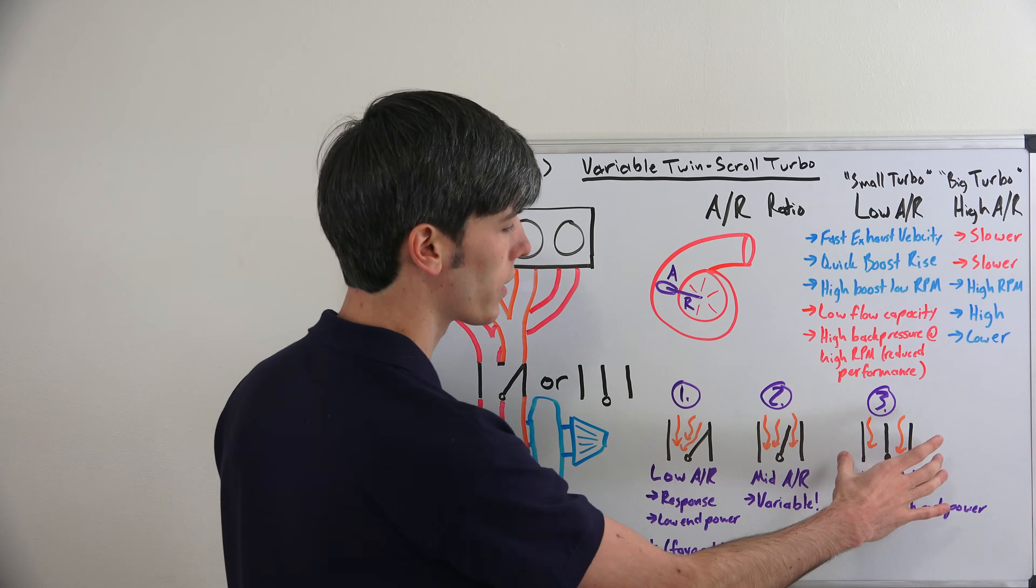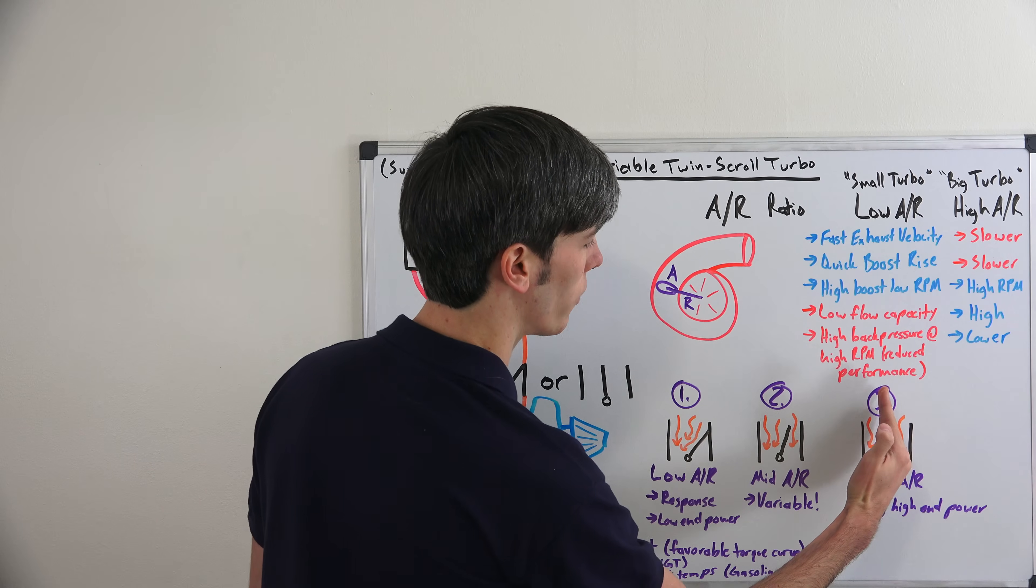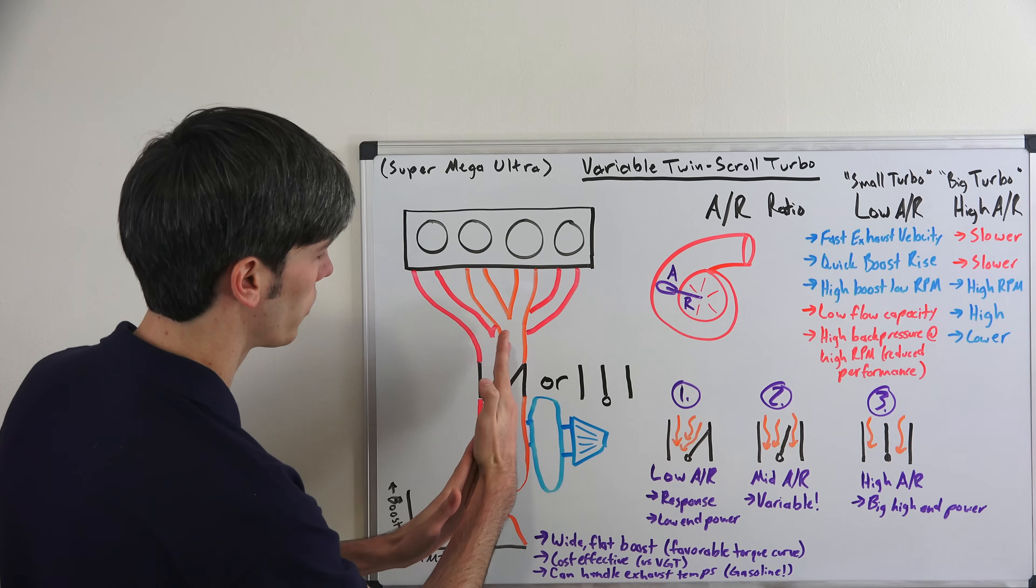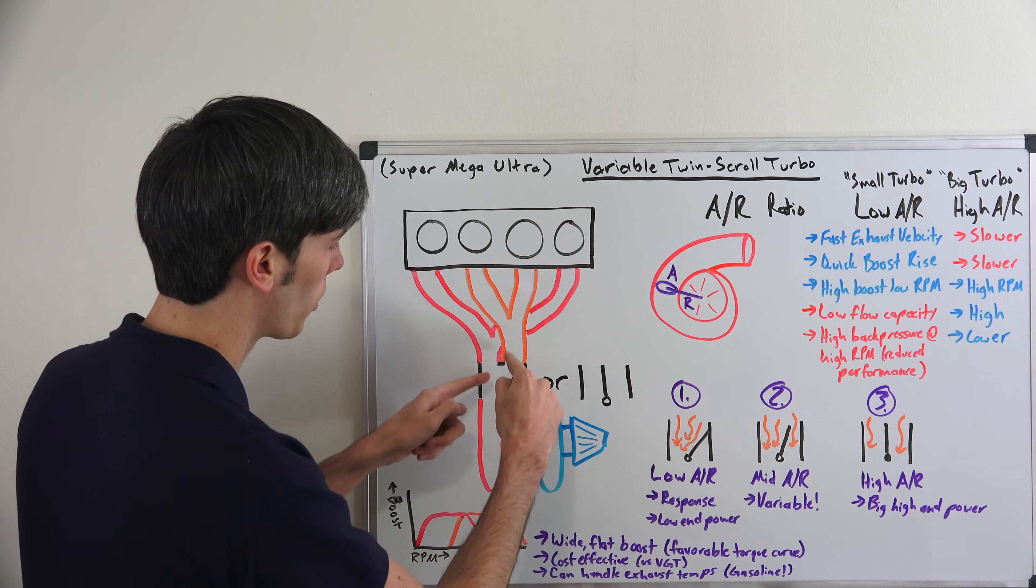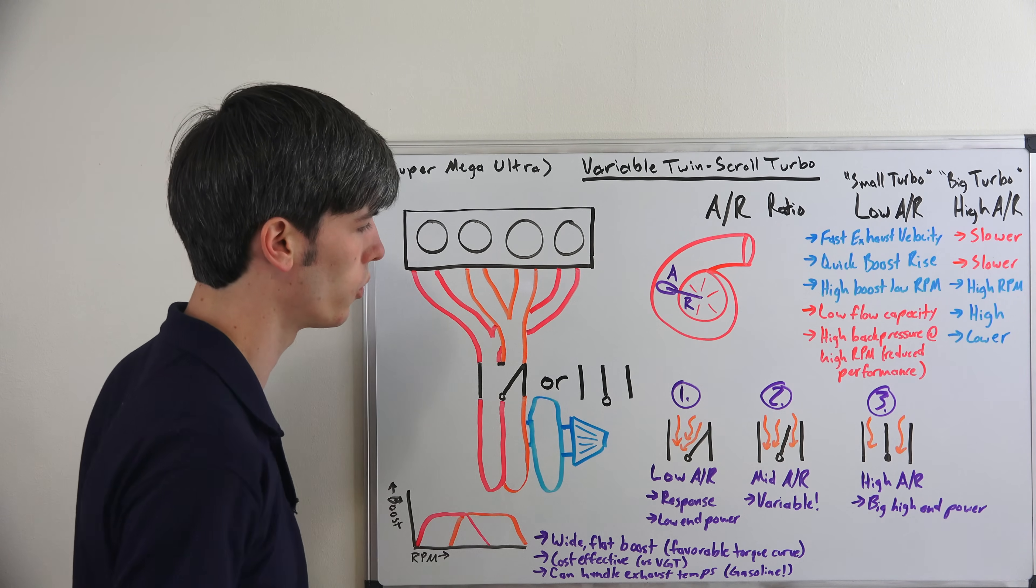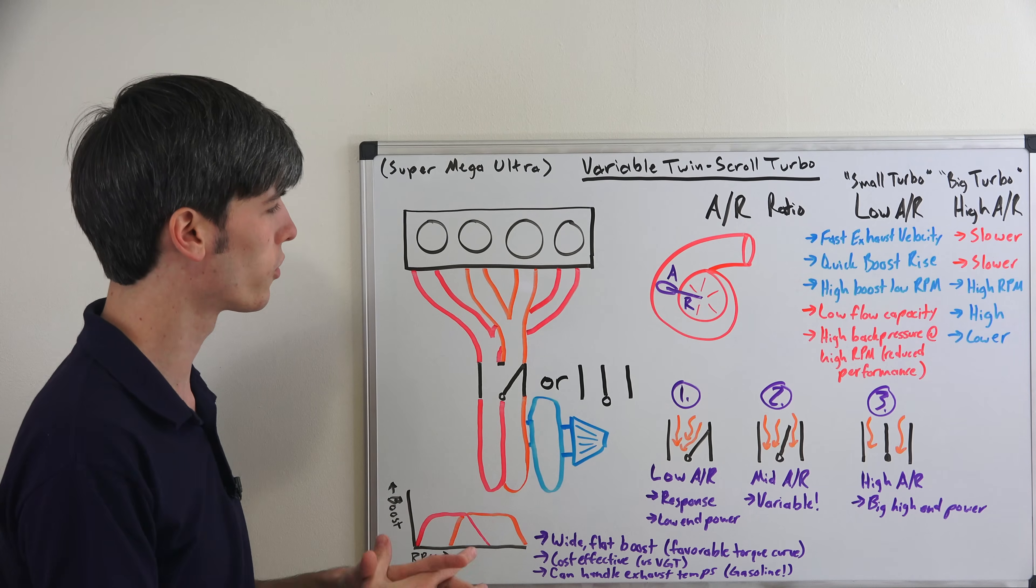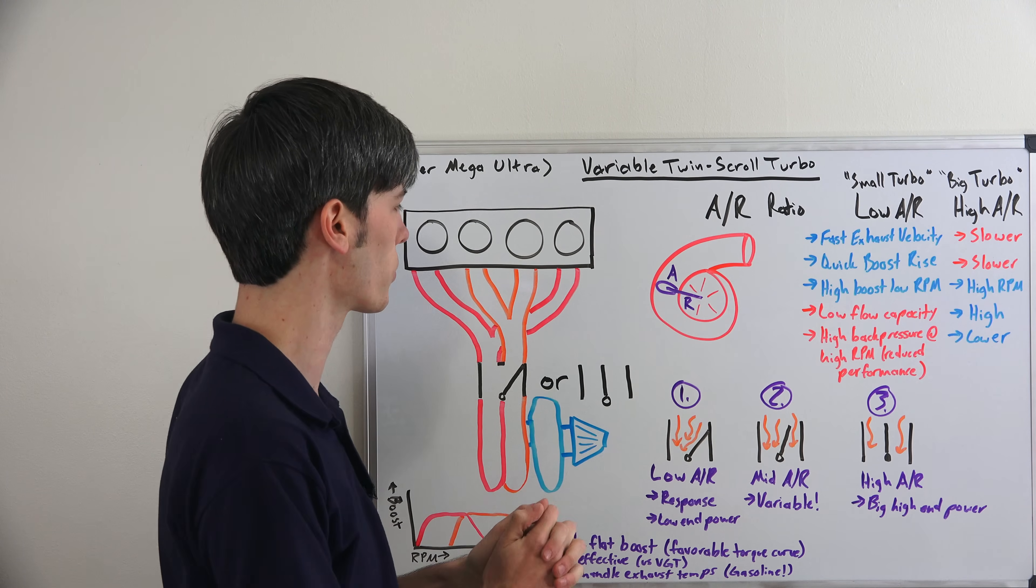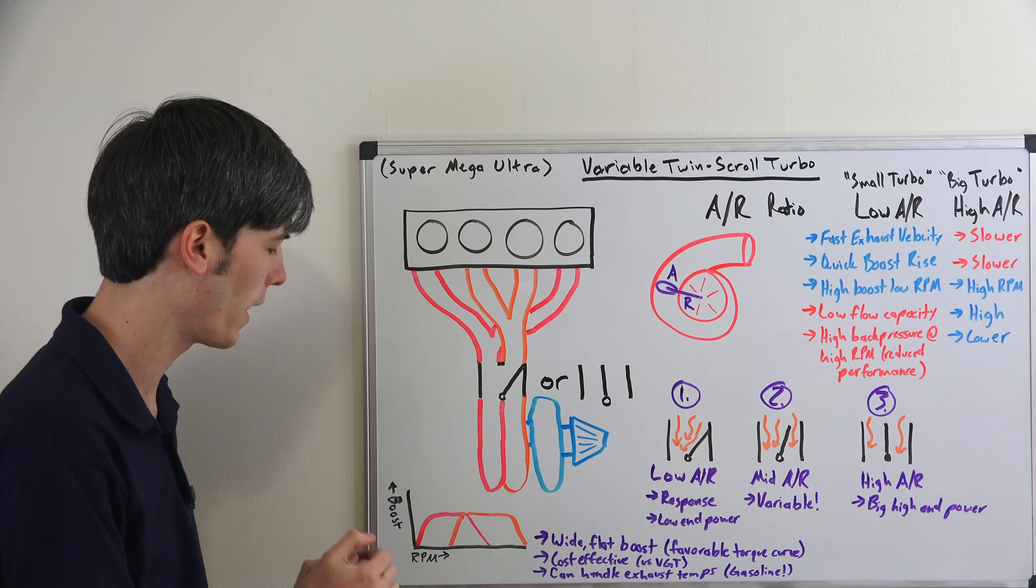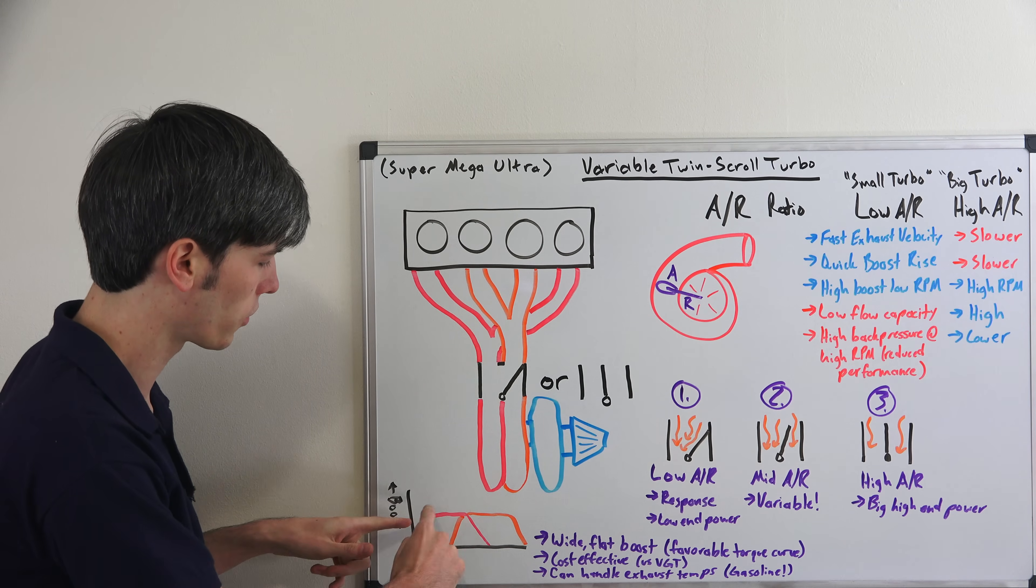And then finally you will end with a high AR ratio as a result of having that lever essentially basically being straight, so you're perfectly diverting those two between the two scrolls. You can make bigger high-end power, so what you're doing is making a variable geometry turbocharger but in a much more simple way. Your boost curve is going to look something like this.